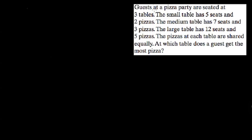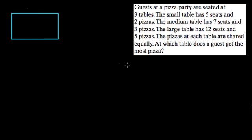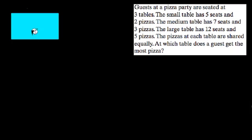In this problem, we're told that guests at a pizza party are seated at three tables. There's a small table with five seats and two pizzas. Here's my small table — we'll draw the five seats and the pizza here.